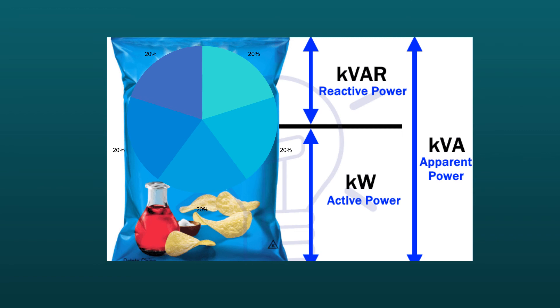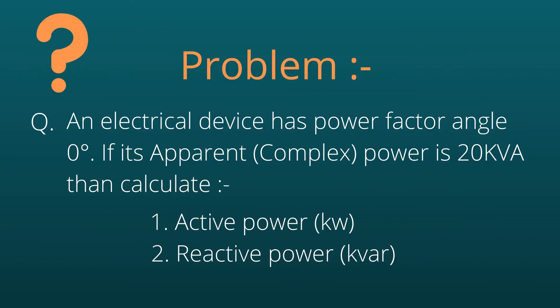I am sure you have understood the concept of electrical powers — active power, reactive power, and apparent power. Here is a question for you to solve and put the answer in the comment box: An electrical device has a power factor angle of 0 degrees. If its apparent power is 20 kVA, calculate the active power and the reactive power.